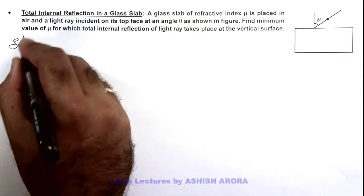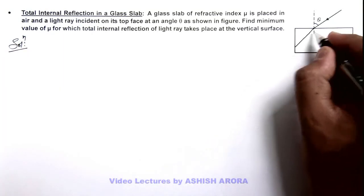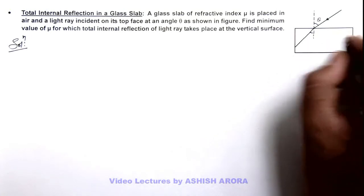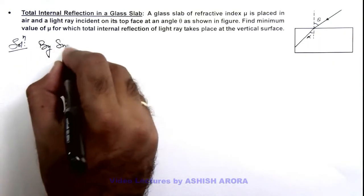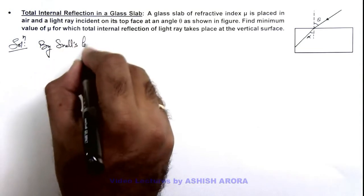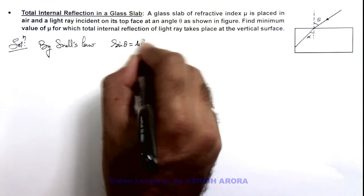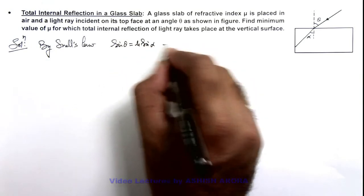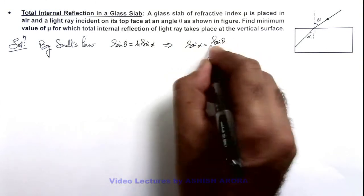Here in solution, first we can find out the angle at which the light will enter in the glass slab. Say if this angle is alpha, we can write by Snell's law sine theta is equal to mu sine alpha, which gives us the value of sine alpha that is equal to sine theta by mu.